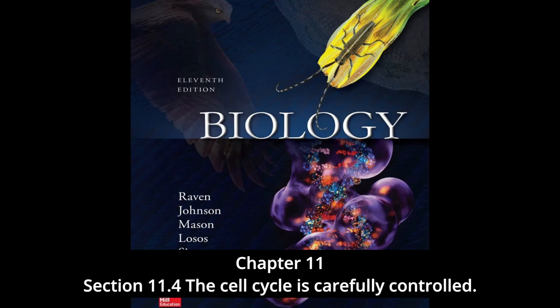Architecture of the control system: three principal checkpoints control the cell cycle in eukaryotes. Cell growth is assessed at the G1 checkpoint, located near the end of G1 just before entry into S phase. This checkpoint makes the key decision of whether the cell should divide, delay division, or enter a resting stage. In yeasts, where researchers first studied this checkpoint, it is called start. If conditions are favorable for division, the cell begins to copy its DNA, initiating S phase. The G1 checkpoint is where more complex eukaryotes typically arrest the cell cycle if conditions make division impossible, or if the cell passes into G0 for an extended period.